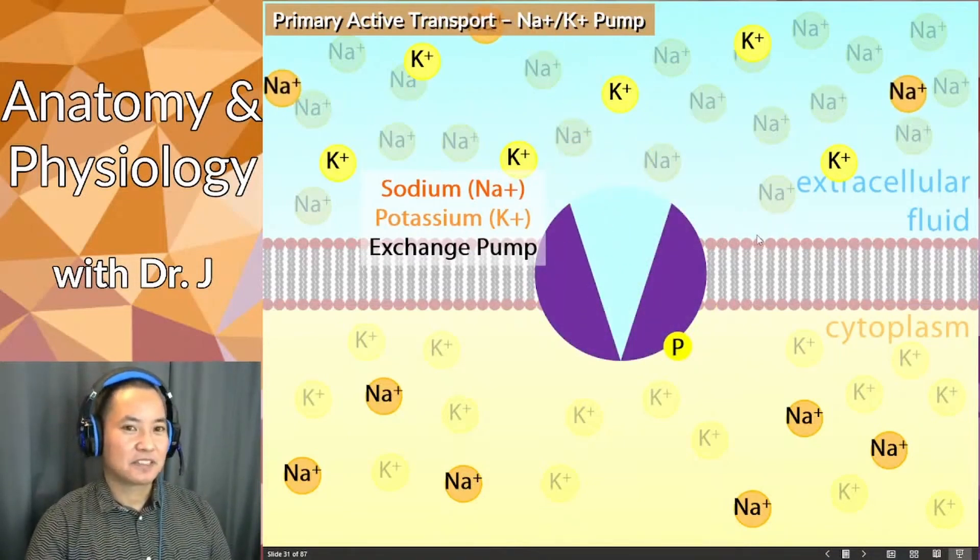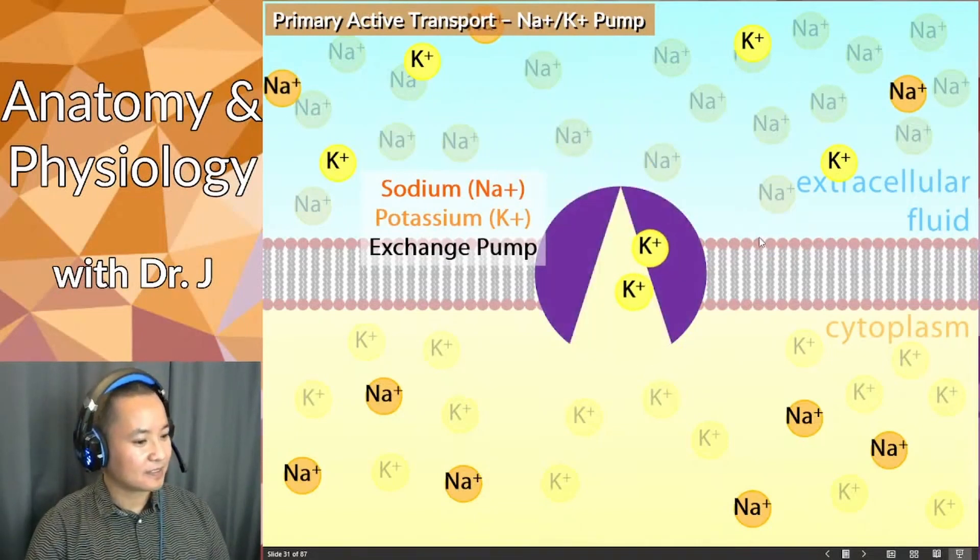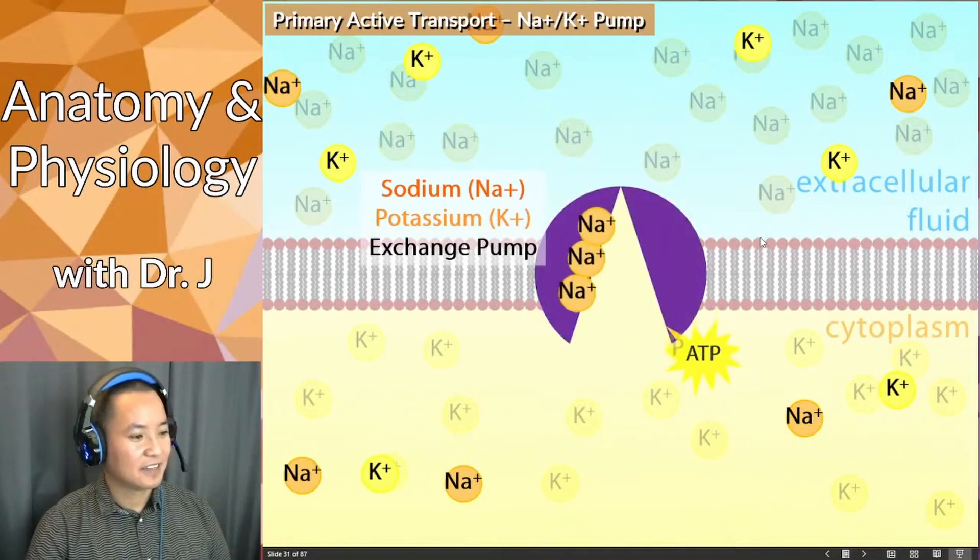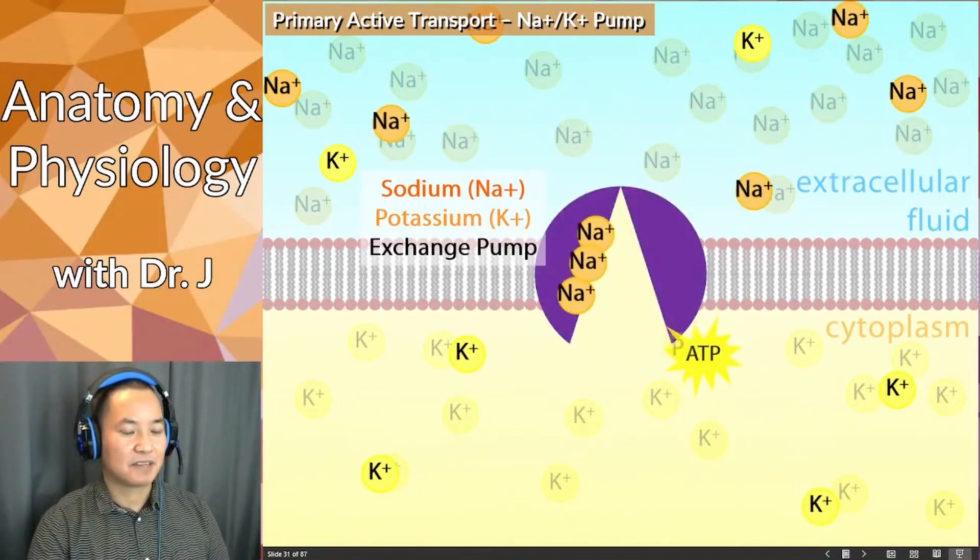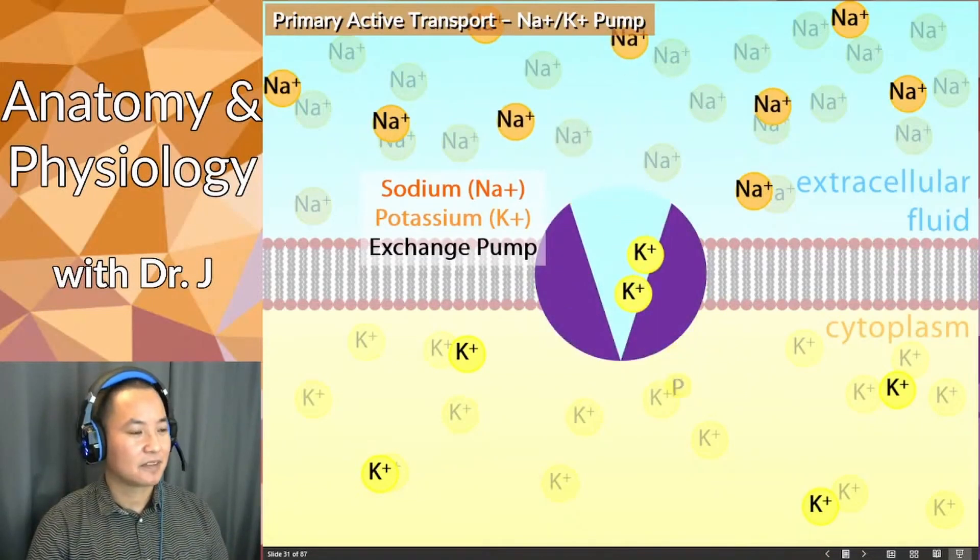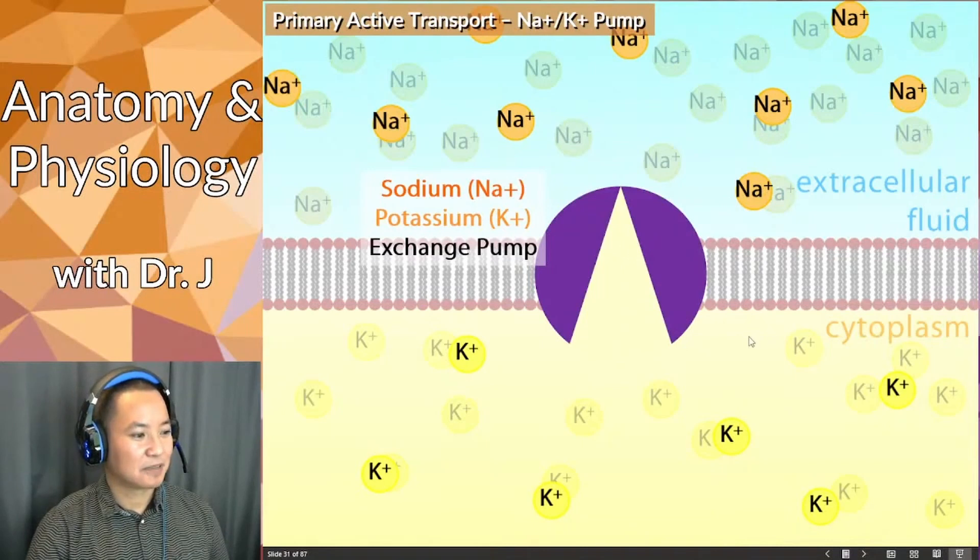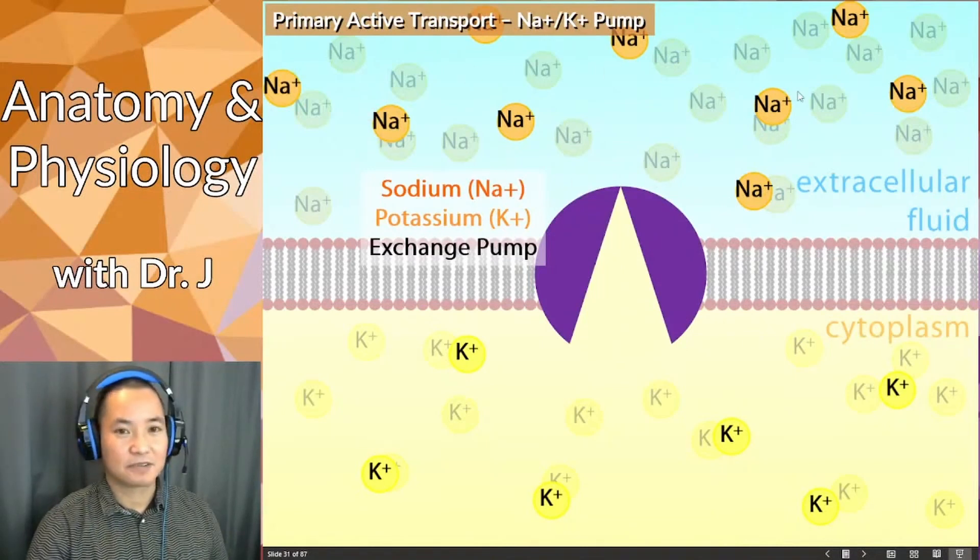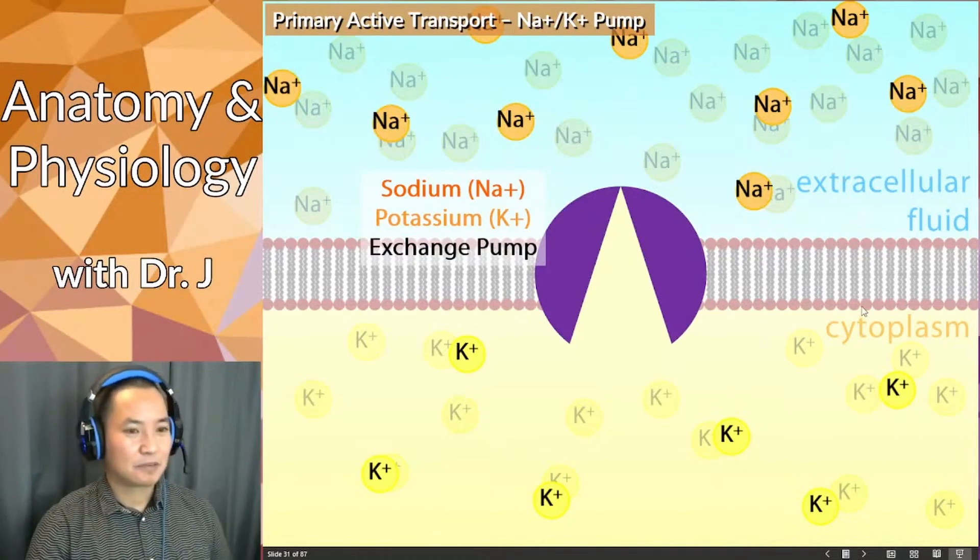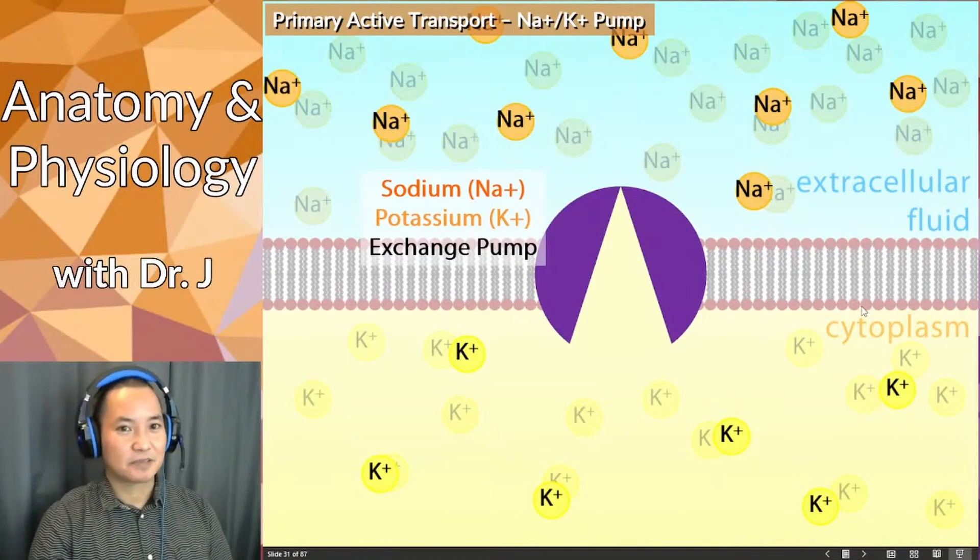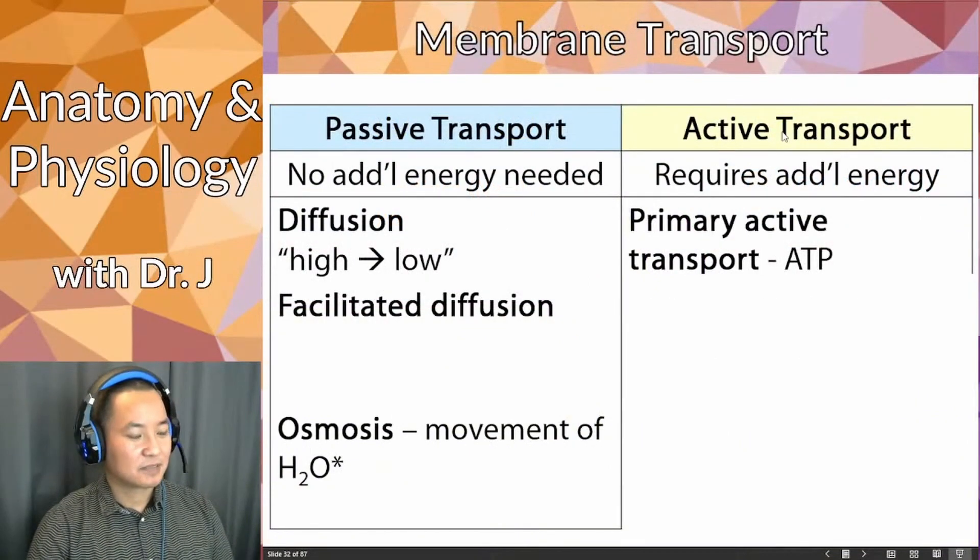Before it resets back to where it was, it's going to bring in two potassium ions. Every round is going to use ATP to pump out sodium, bring in potassium, pump out sodium, bring in potassium. What is the end result? We were able to add more sodium where there was already a lot of sodium, and we brought more potassium into the cell which was already full of potassium. That's primary active transport.